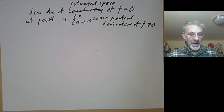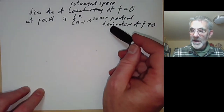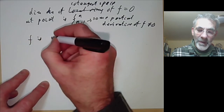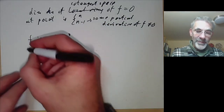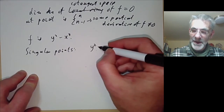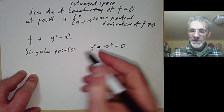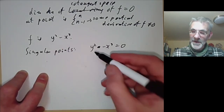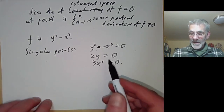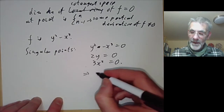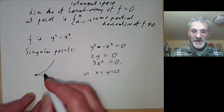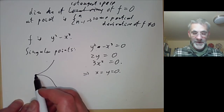For instance, if f is y² - x³, the singular points are those satisfying the following equations. First, y² - x³ = 0, because singular points must actually lie on the curve. Then 2y = 0 and 3x² = 0. At least in characteristic zero, this implies x = y = 0. So the singular point is exactly the origin, which is what our geometric intuition tells us, because it's the only point that looks kind of funny.